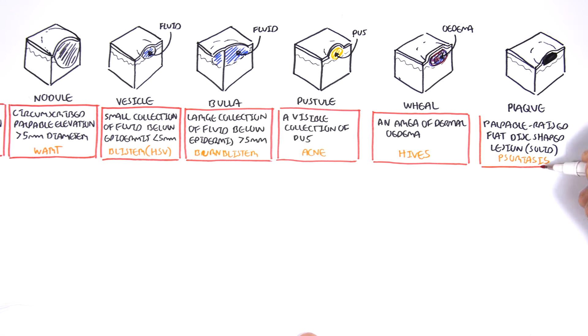So those are some terminologies or terms used to describe lesions. Again, macule, papule, nodule, pustule, wheal, plaque, crust, scale, and ulcer.